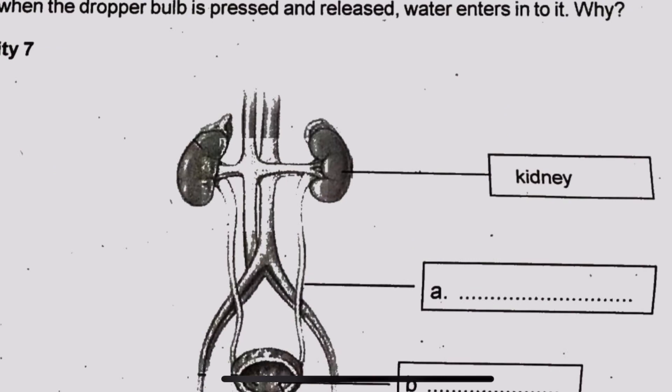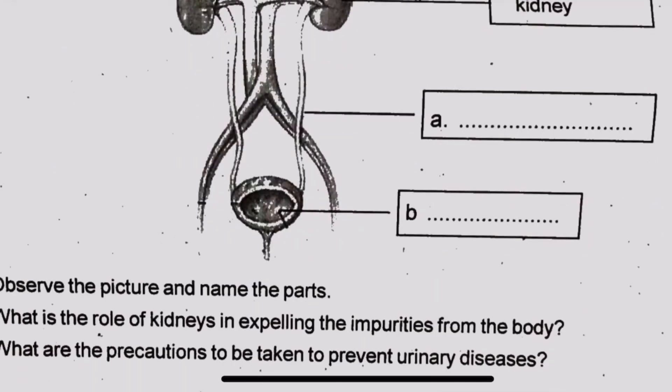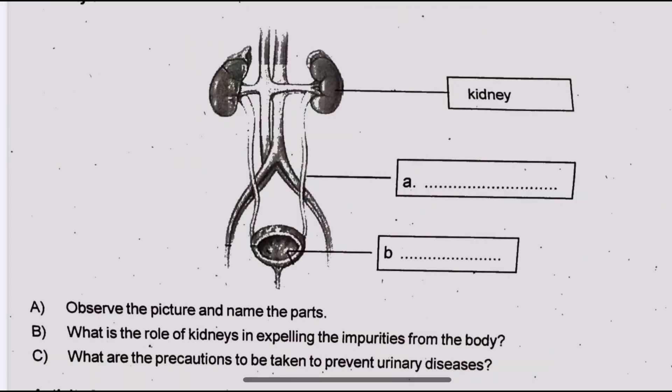The next activity involves a kidney diagram. Observe the picture and name the parts labeled A and B.